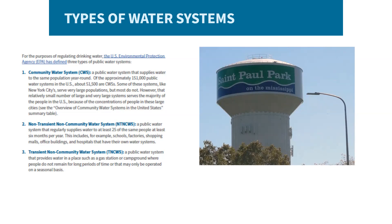The Drinking Water Guide primarily focuses on public water systems. A public water system is defined as a water system that provides water for human consumption through pipes or other constructed conveyances to at least 15 service connections, or serves an average of at least 25 people for at least 60 days out of the year. Public systems may be owned by a public entity, such as a city, or a private entity, such as a for-profit company, so long as the water is being provided for the public.